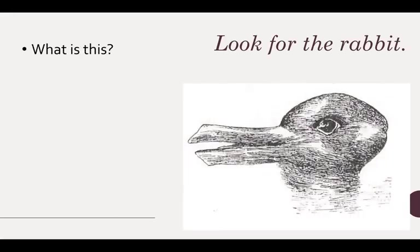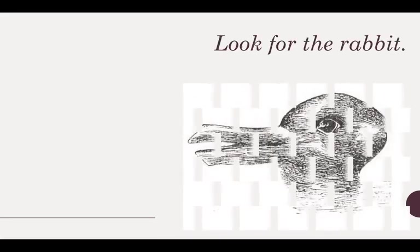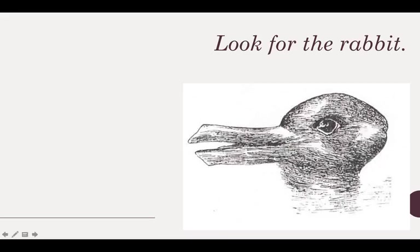Look for the animal and raise your hand when you see the rabbit. And what if I say look for the bird? Hopefully you see a duck. A duck has the bill over here and the eye over here, and the rabbit has the mouth over here and the eye over here. So depending on what I told you to look for — the duck or the rabbit — you would have seen different things.